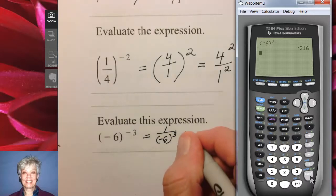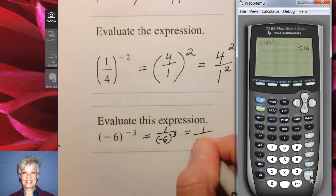So our answer is 1 over negative 216, and your MyMathLab really doesn't like, and even math teachers don't like, the negative sign on the bottom. So it's really preferable to write the answer like this.